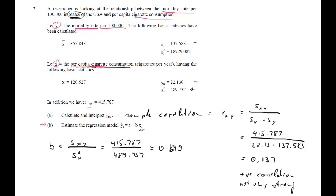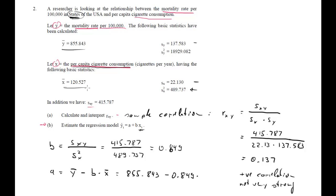For the intercept a, we have the mean of the dependent variable minus b times the mean of the explanatory variable. y bar is 855.843, minus 0.849 times the average value of x, which is 120.527. If you calculate that, what you get is 753.51.